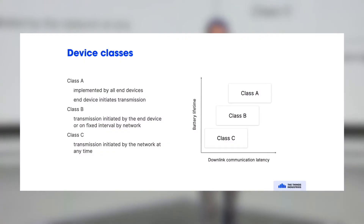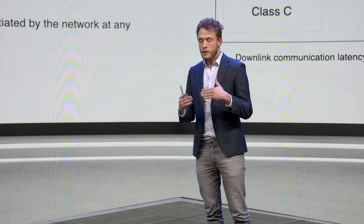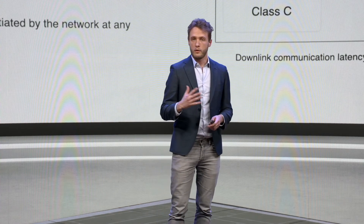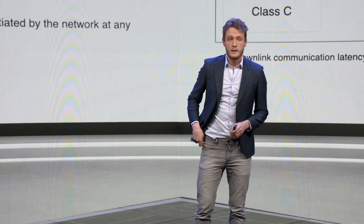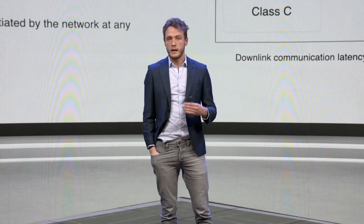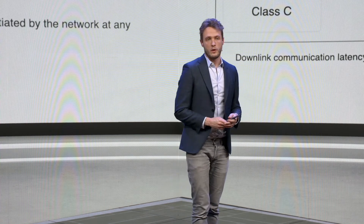Class B is beaconing — the best way to remember it. The beacon is sent by the network on a fixed interval by gateways, and the end device can pick up this beacon and wake up to receive a downlink message. Class B devices are in deep sleep but wake up on a time interval — every half minute or two minutes — to listen for traffic. It's not as low power as Class A but allows the network to send messages with latency of tens of seconds to a few minutes.